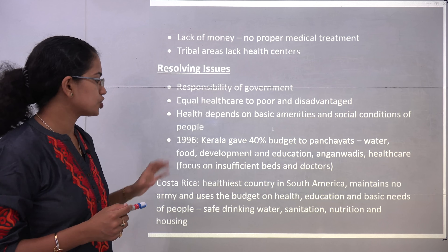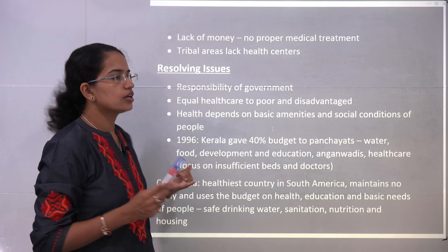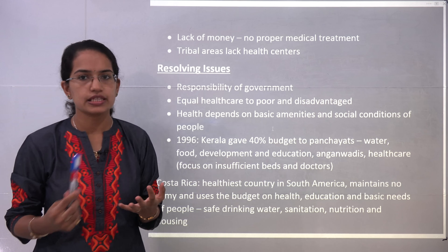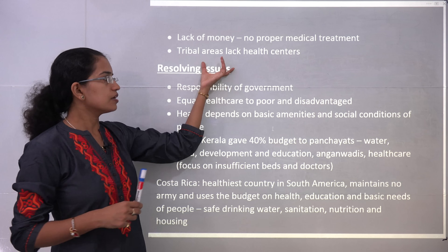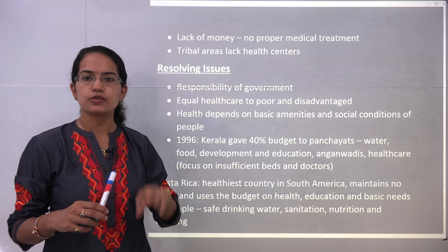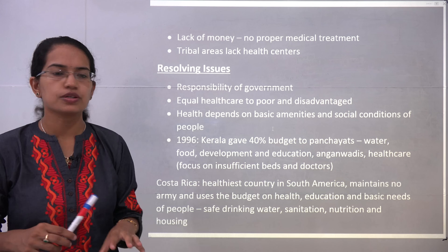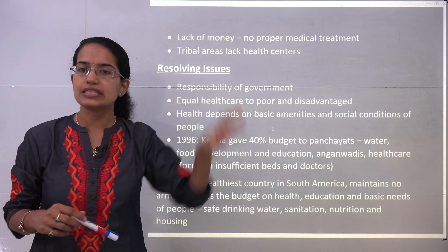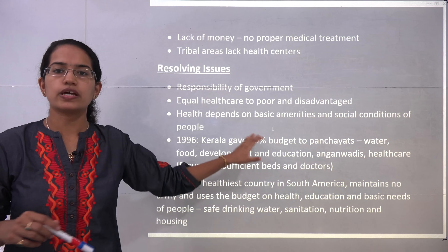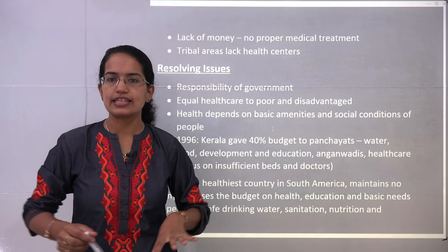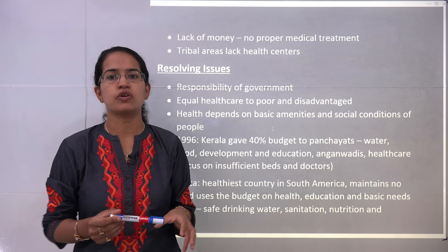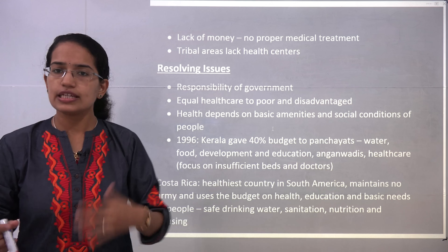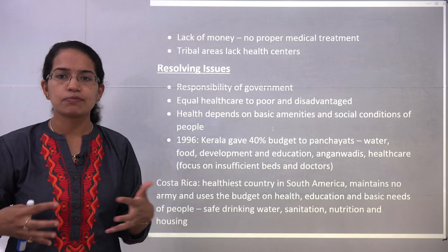What are the issues that need to be resolved? First, the government should take responsibility for providing good healthcare facilities in India. Equal healthcare facilities should be provided to disadvantaged and poor groups. Healthcare facility also depends on basic amenities and social conditions — if there is more cleanliness, there would be less breeding grounds for mosquitoes and fewer cases of malaria. All these things are basically interrelated.